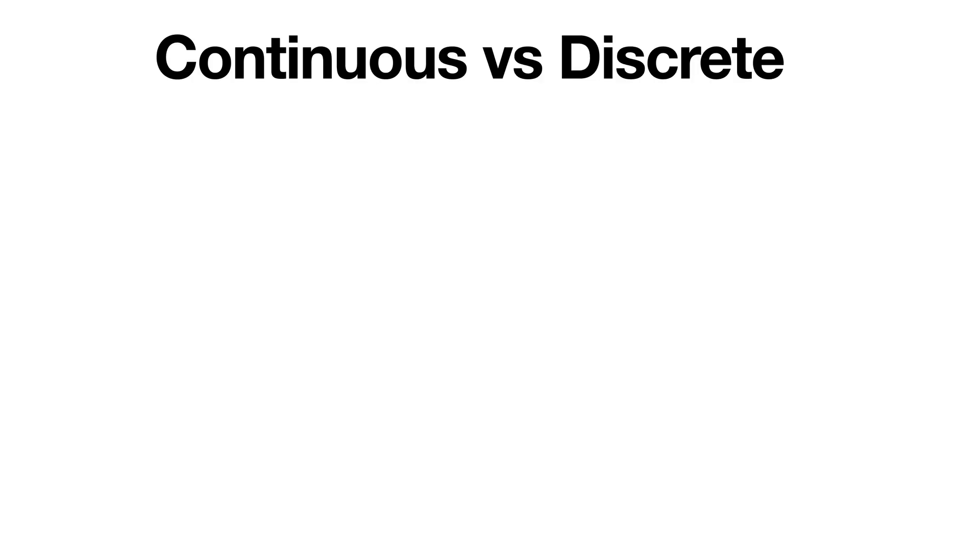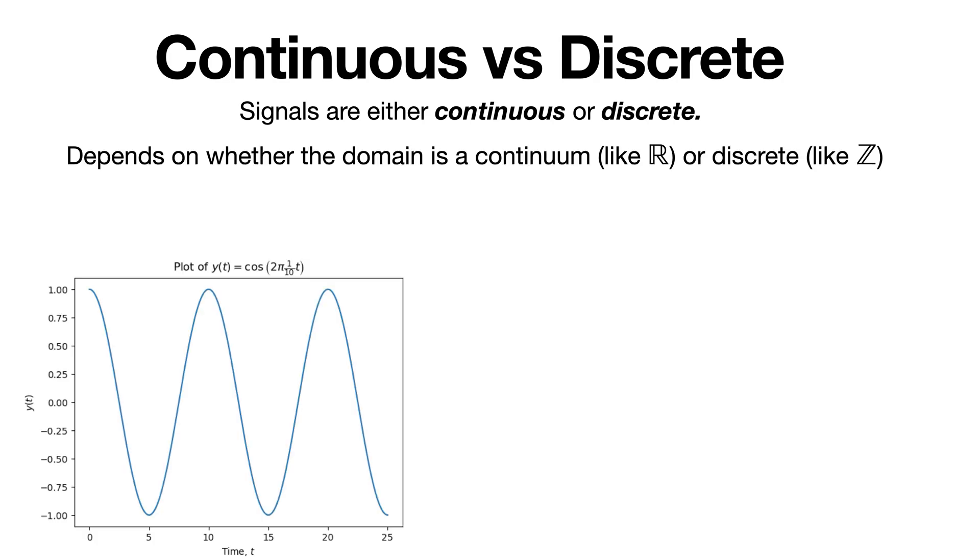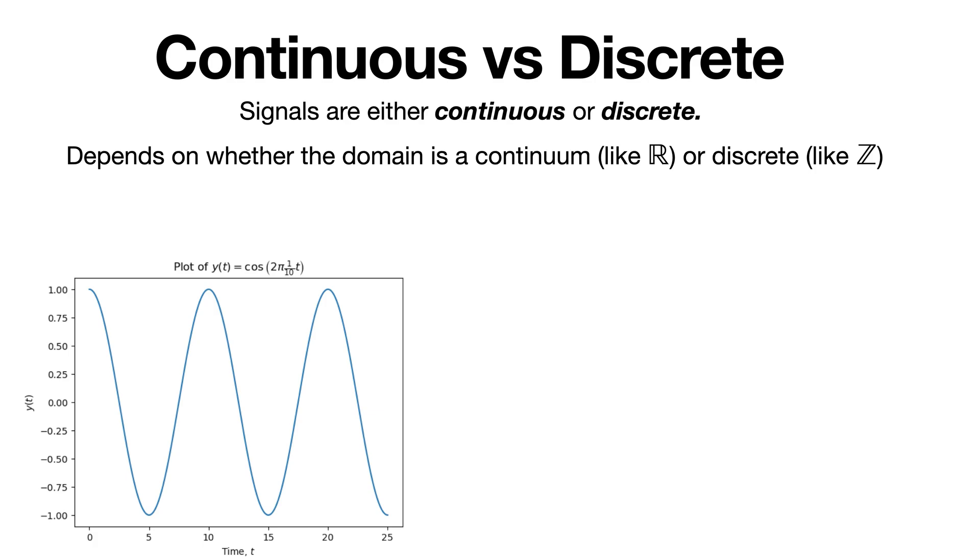One more thing. Signals are either continuous or discrete, which refers to whether there are gaps between the values or not. More technically, it has to do with whether the domain of your signal is the continuum, like the real numbers, or discrete, like the integers.